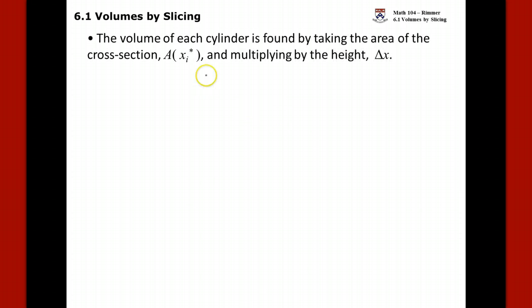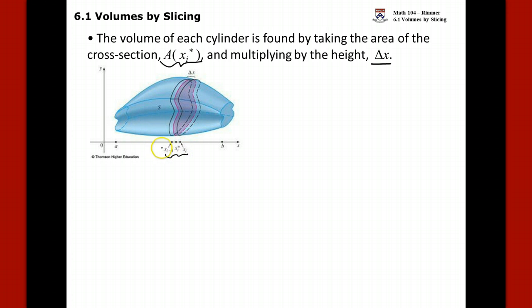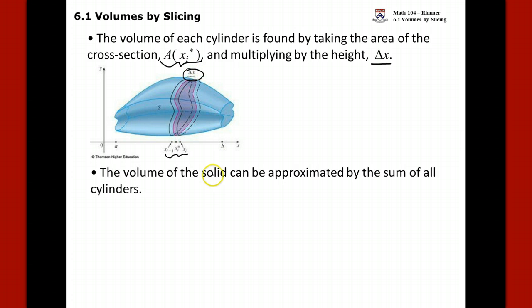The volume of each cylinder is found by taking the area of the cross section and multiplying by the height, which is DX. We have some interval from X sub i minus 1 to X sub i, and we slice the shape with the plane to get this cylinder-like shape. X sub i star is where we choose to evaluate the area — on the left, right, or middle.